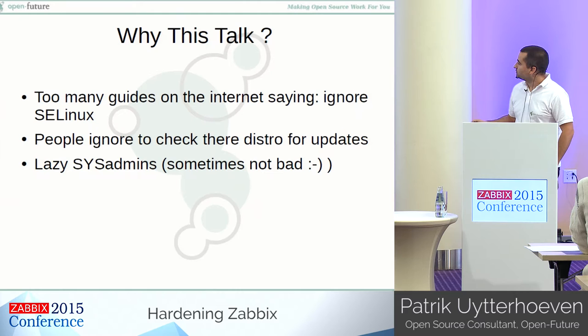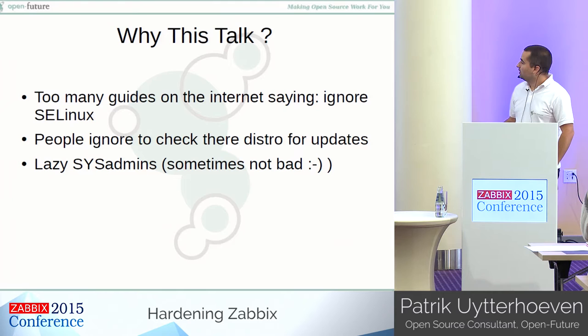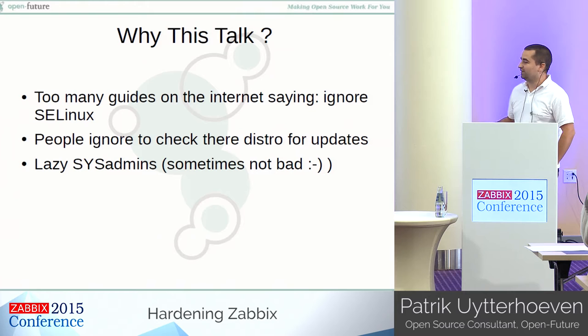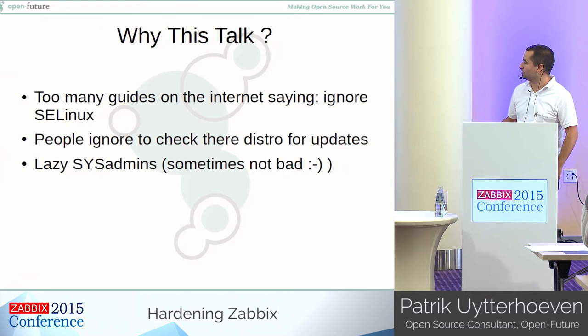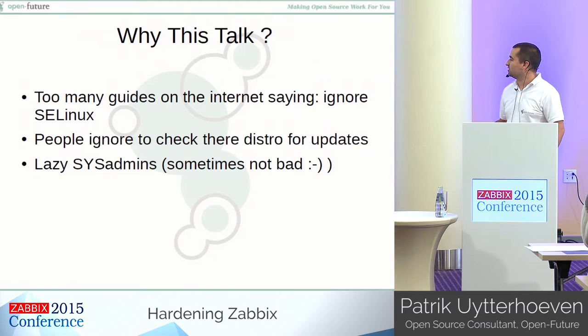Why this talk? Too many guides on the internet are saying just ignore SELinux, disable it, it's too difficult, just ignore it. People also ignore checking if their distro has updates. We are Linux guys — we are sometimes too secure in our operating system. We think that only Windows people have updates and that we don't really have to do it on our Linux boxes. And then of course there are lazy sysadmins. Normally it's a good thing because you try to automate things, but sometimes you're too lazy to do your updates, too lazy to dig into SELinux and how things work.